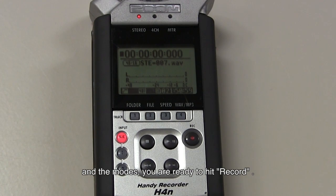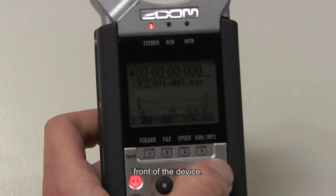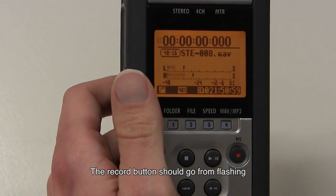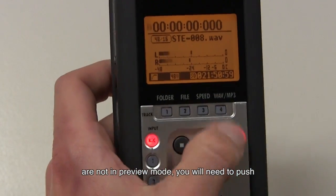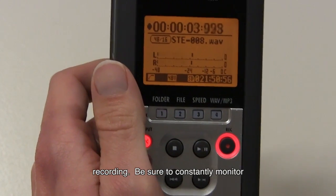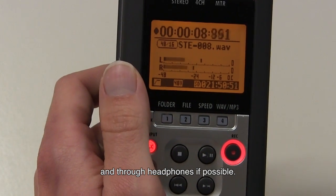Once you have set up your SD card, inputs, levels, and the modes, you are ready to hit record. To do so, press the record button on the front of the device. Since you should have been in preview mode before, the record button should go from flashing to solid red. If you are not in preview mode, you will need to push the record button a second time to engage recording. Be sure to constantly monitor your levels using the bars on the LCD screen and through headphones if possible.